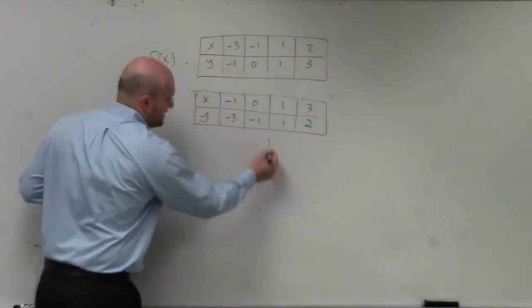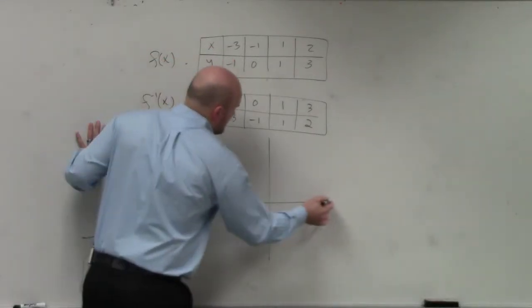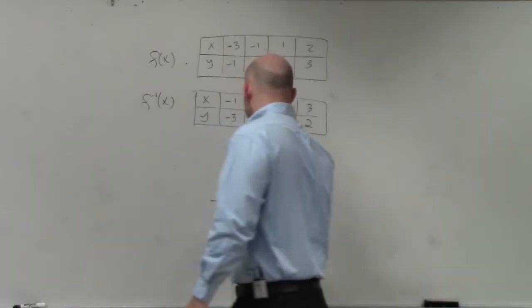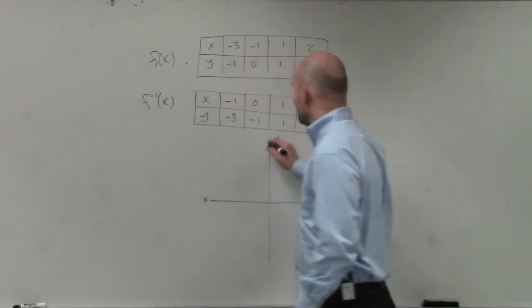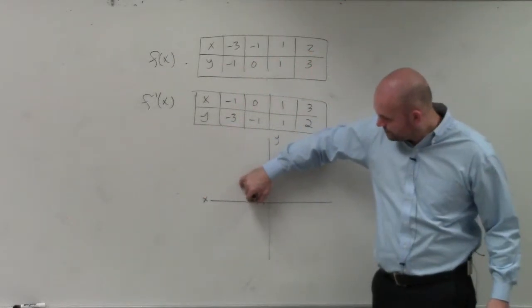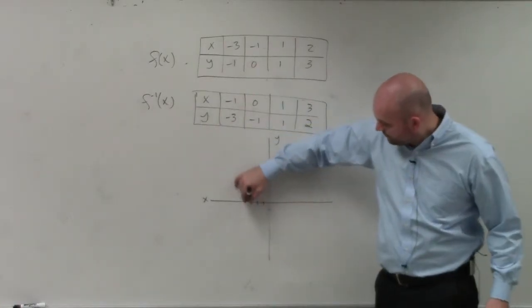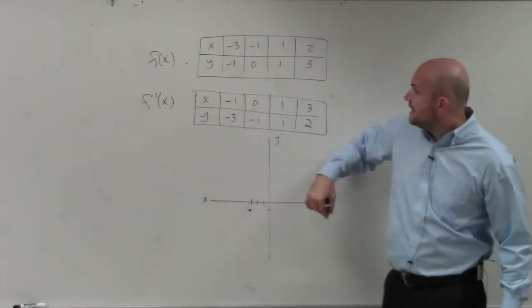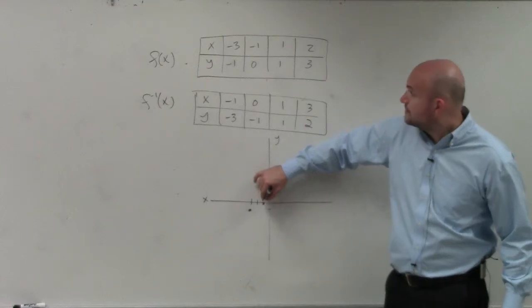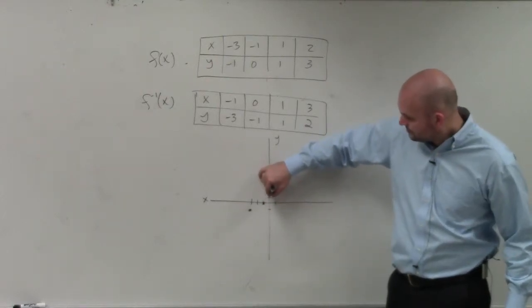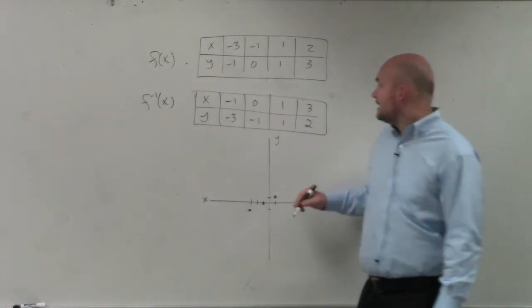All right. So now all I got to do is plot the points. So I go to negative 3. Here's my x-coordinate, here's my y-coordinate. So negative 3 would be negative 1, 2, 3, and then down negative 1. Then I have negative 1, 0. 1, 1. And I have 2, 3.